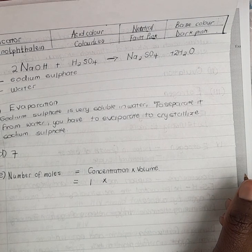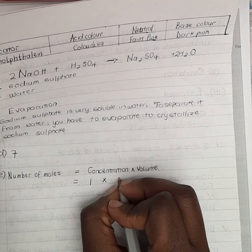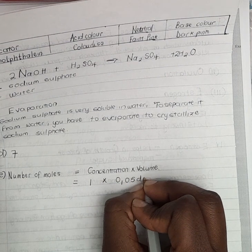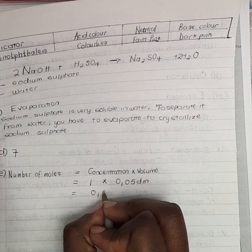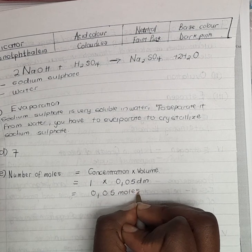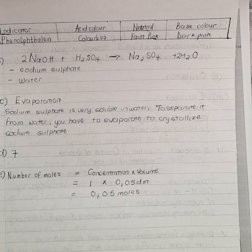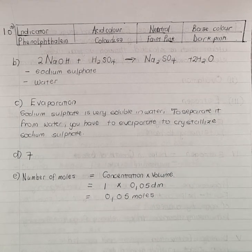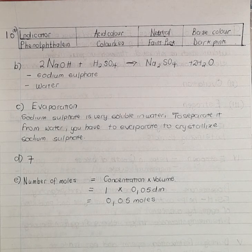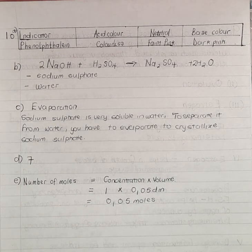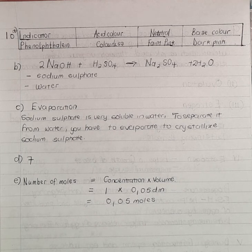We are told that 0.05 moles of sodium hydroxide react in the titration. According to the balanced equation, two moles of sodium hydroxide react with one mole of sulfuric acid. So exactly half the number of moles of sulfuric acid takes part in the reaction. That is the number of moles required for neutralisation of sulfuric acid. Now that we know the number of moles of sulfuric acid, we want to calculate its concentration.